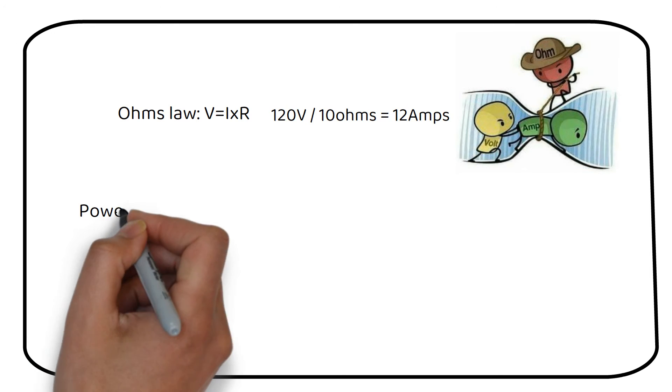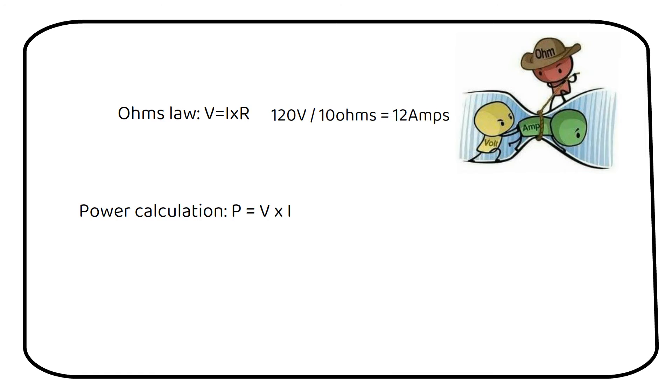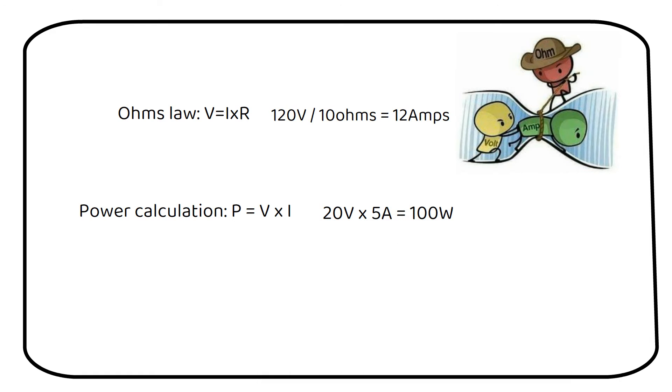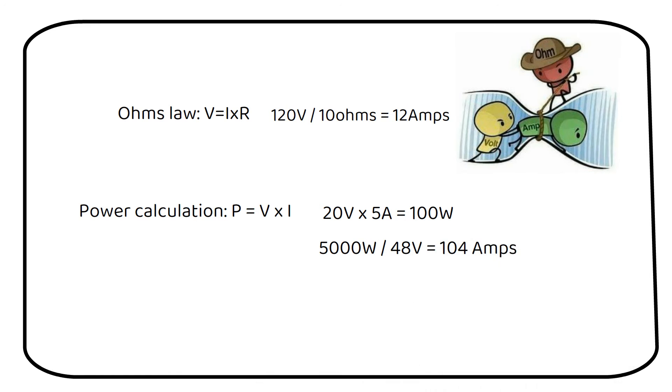Power calculations are used the most in solar systems. For example, a solar panel with a voltage of 20 volts and a current of 5 amps has a power rating of 100 watts. You can find out the current through a conductor. We use this to calculate the wire size later on in this video. For example, a 5000 watt inverter on a 48 volt battery system. The current through the wire is 104 amps.